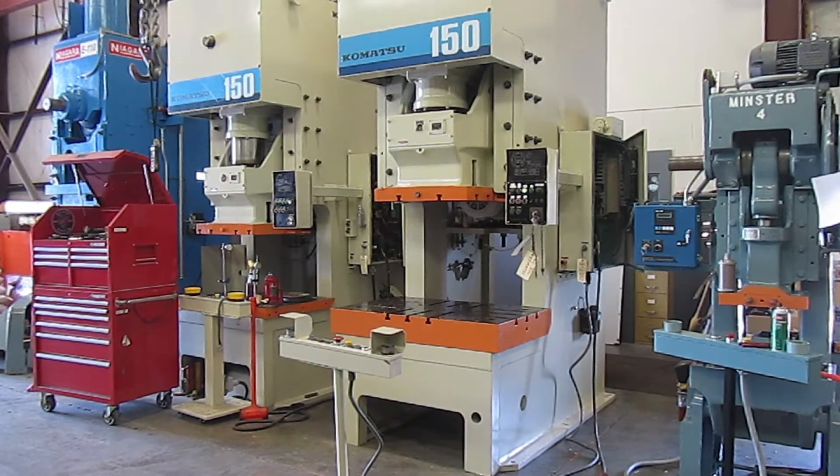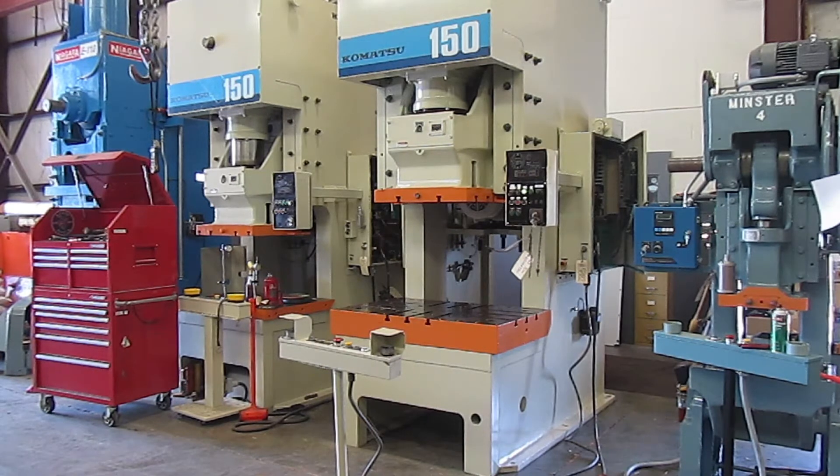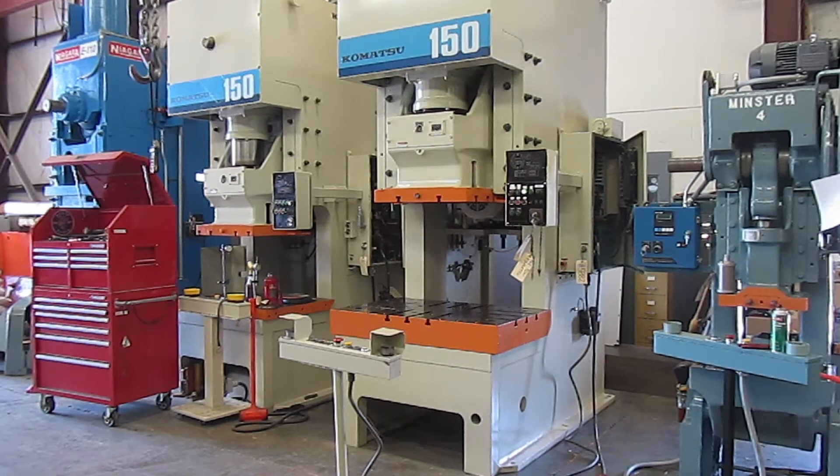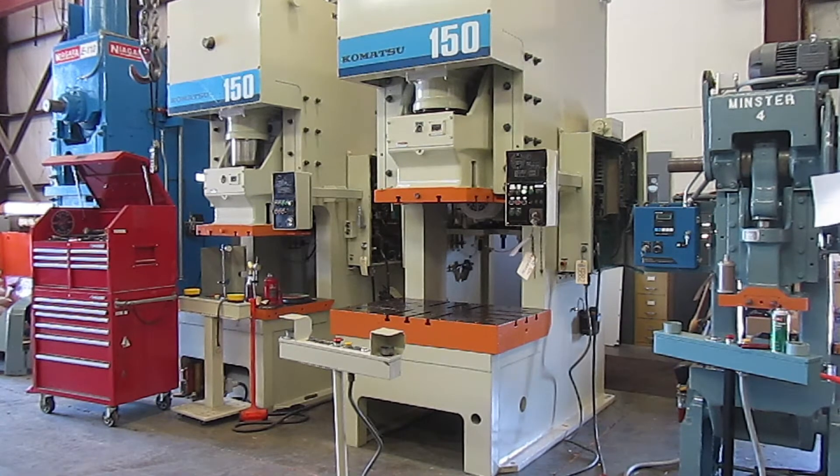This is Alba machine number 5882. It's a 165 ton Komatsu backgear gap frame press, model number OBS 150-3. The serial number is 11060. It's a 1988 press. It's in very good condition. It's in our Columbia, Tennessee warehouse.